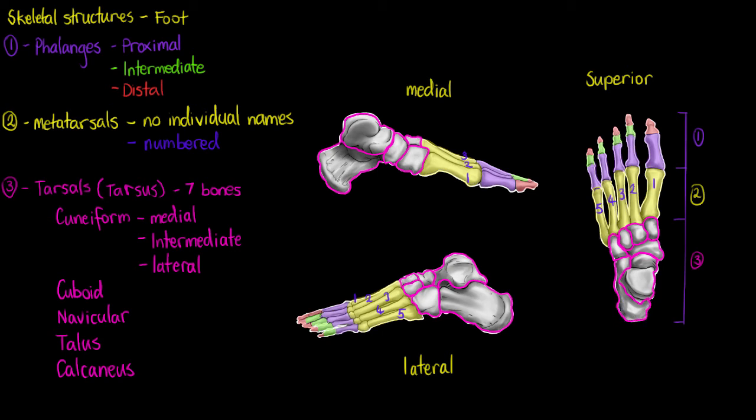And this bone is going to have a few unique features, just like with our talus. The first of which being the calcaneal tuberosity. Now the calcaneal tuberosity is the area we commonly refer to as our heel. I usually remember that by saying calcaneal heel. And we can see it here on the lateral. It's the whole section that's behind our talus bone.